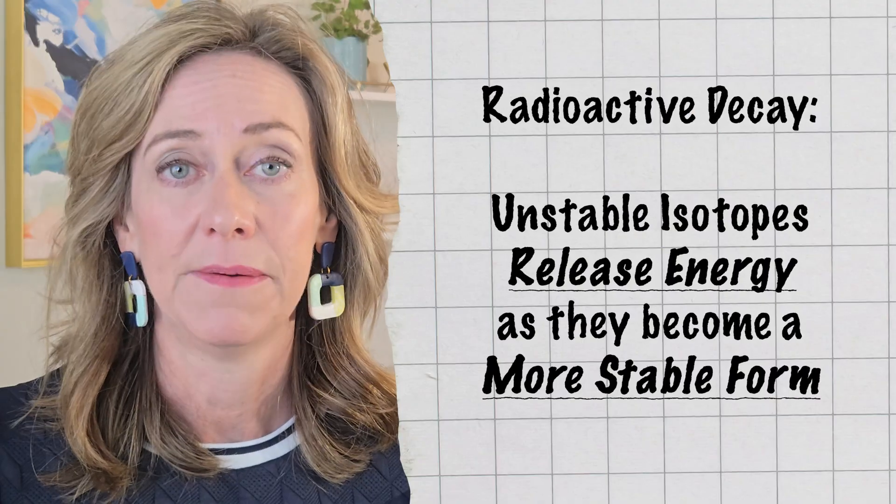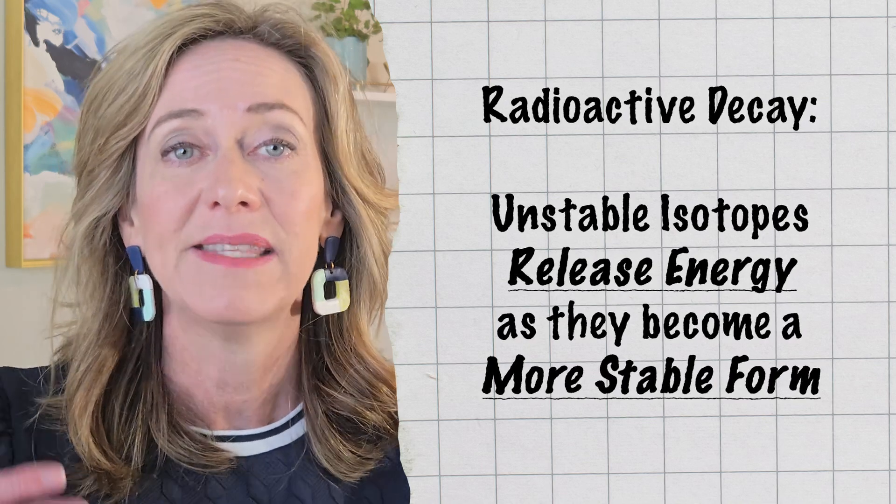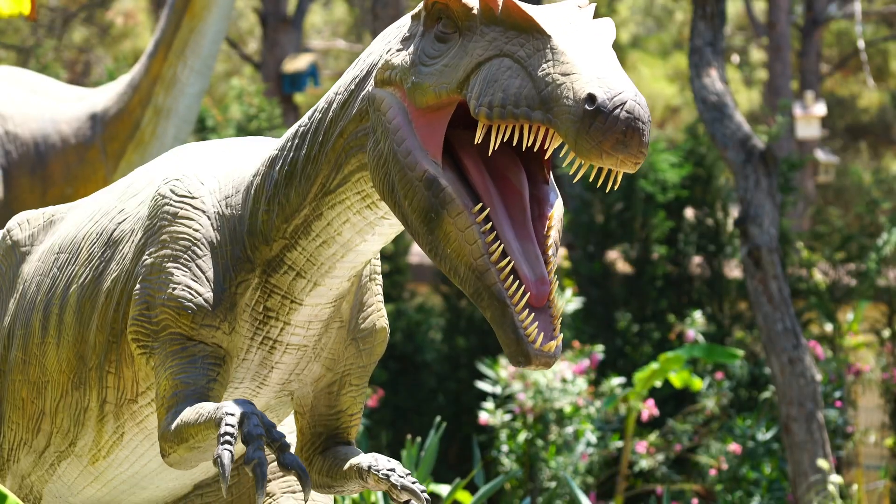Isotopes, while similar in many ways, can have vastly different properties. Some isotopes are unstable, meaning they undergo something called radioactive decay. During this process, the unstable isotopes release energy as they become a more stable form. The unique characteristics of each isotope have proven valuable to scientists — one fascinating application is used in archaeology and paleontology, allowing them to measure the specific amount of a radioactive isotope present in ancient remains like fossils to estimate the age of a specimen.